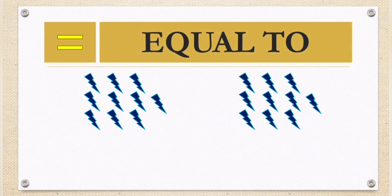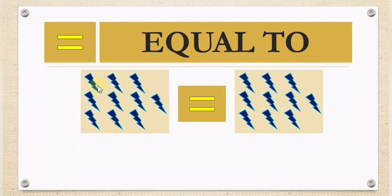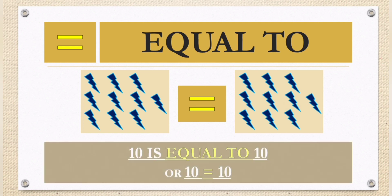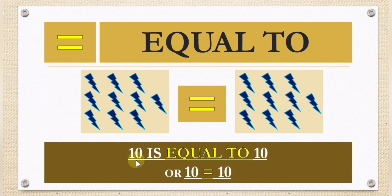Equal to. Let's count how many lightning symbols there are. In the first box: one, two, three, four, five, six, seven, eight, nine, ten. How about in the second box? One, two, three, four, five, six, seven, eight, nine, ten. In the first and second box there are ten lightning symbols, so they are equal. These can be read as ten is equal to ten, or written as ten equals ten.